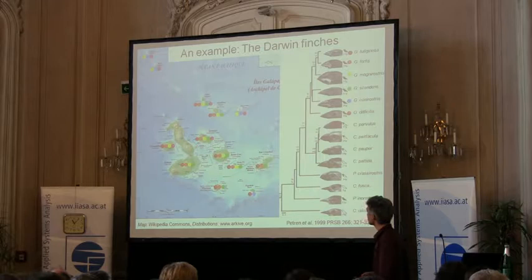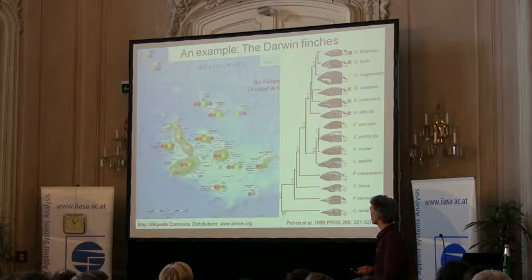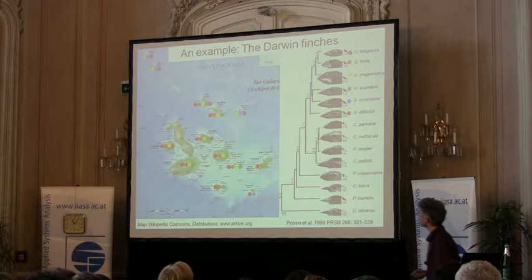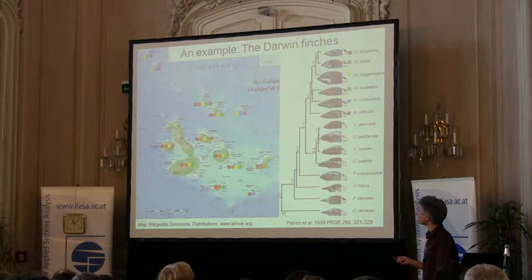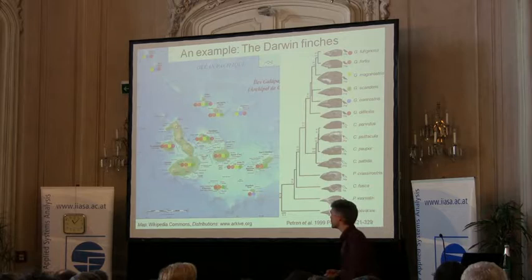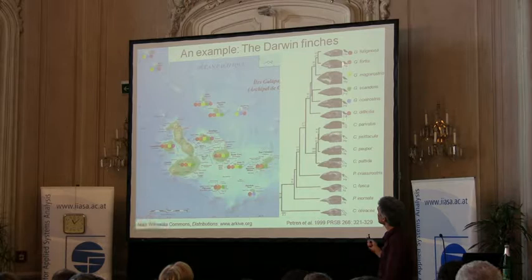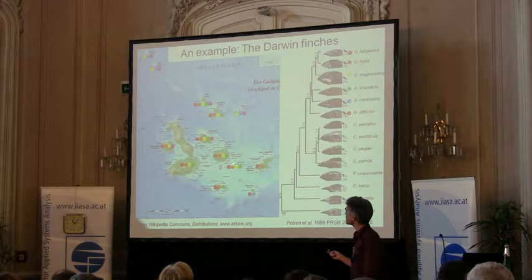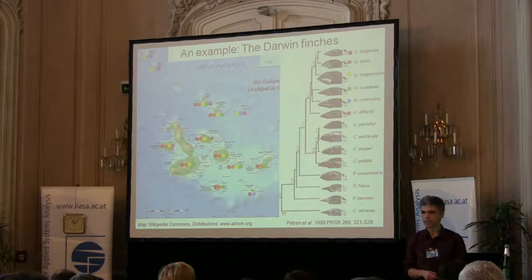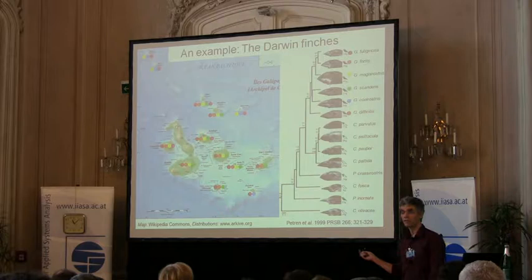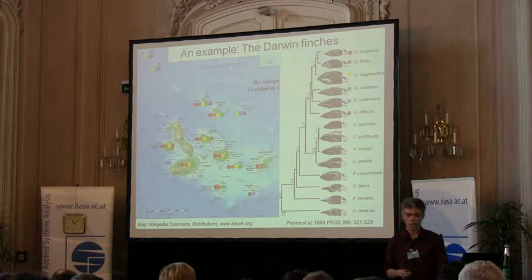We know that these finches arrived to the islands some two to three million years ago, and have since then radiated into a whole suite of different morphs, even species. They occur on many of these islands, and usually many species coexist on the same island. I have color-coded some of the distributions here, namely of the ground and cactus finches, so you see that on each island there is a sort of community of interacting finches competing for resources. I'm not a specialist on Darwin finches, and this is not a talk about Darwin finches — just to give you a brief introduction to some of the concepts I will talk about.